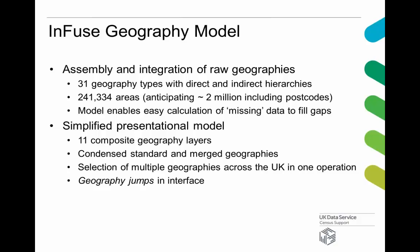Local government districts in Northern Ireland, council areas from Scotland, unitary authorities and districts are all combined. We've also done work to simplify the rather overcomplicated system of standard and merged geographies that ONS has used for wards and districts in England and Wales by bringing the data together into a single layer. The idea is that it brings together the data and makes it easy for you to select. The interface allows you to make complex selections in multiple areas from different geographies across the UK in a single operation, and allows what we call geography jumps — so you can select England and specify that you want all the wards in England without drilling down through all intermediate geographies.